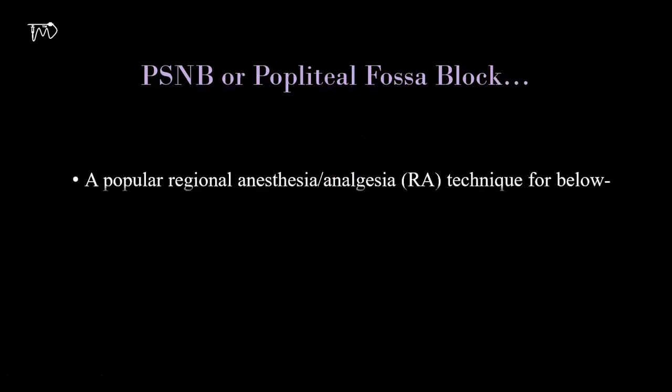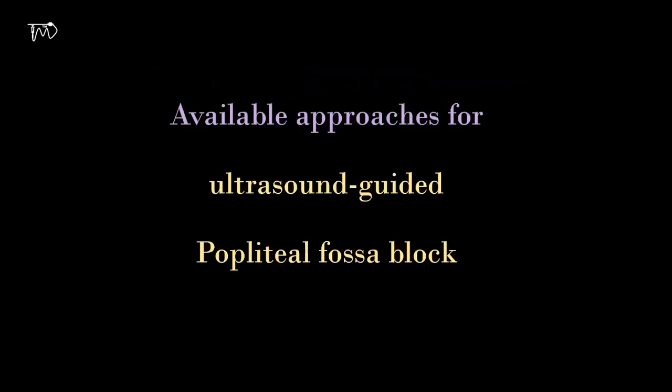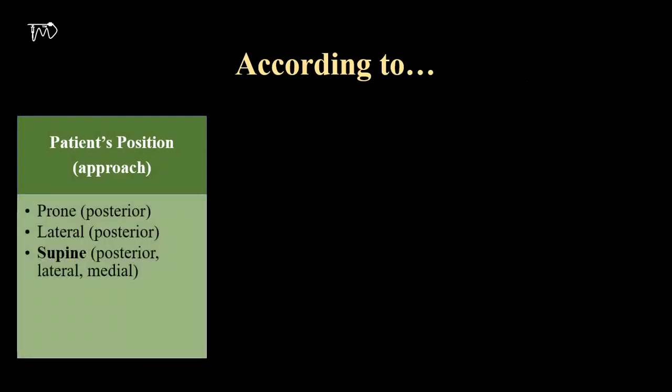Popliteal sciatic nerve block or popliteal fascia block is a widely practiced regional anesthesia technique for below-knee surgeries. It is either used alone or in combination with femoral or saphenous nerve block to provide complete analgesia. Various approaches have been described to perform ultrasound-guided sciatic nerve block in the popliteal region. According to patient position, it can be performed in prone and lateral positions with posterior approach, or in supine position with posterior, medial, and lateral approaches.